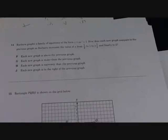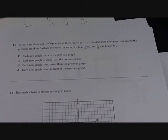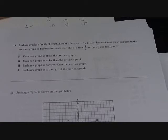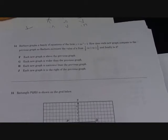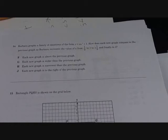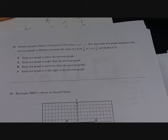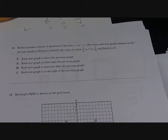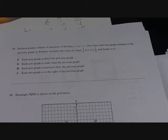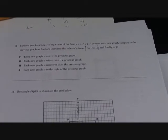Barbara graphs a family of equations of the form y equals ax squared plus one. How does each graph compare to the previous graph as Barbara increases the value of a from one half to one to one and a half and finally to two?